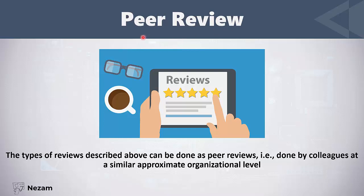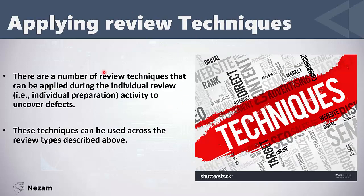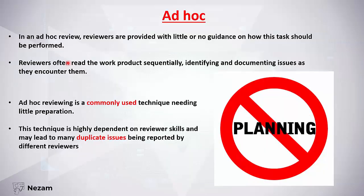Any type of review performed by people at the same organizational level is called a peer review — so if all reviewers are juniors, seniors, developers, or testers, it is a peer review. However, if the review contains a mix of a manager, team leader, senior, and junior, it is not a peer review. Now we will talk about review techniques used inside a review, whether formal or informal. The first technique is ad hoc review — a review with no planning or guidance given to reviewers.